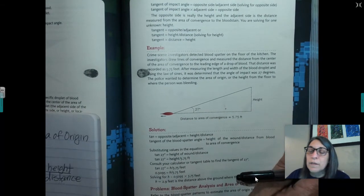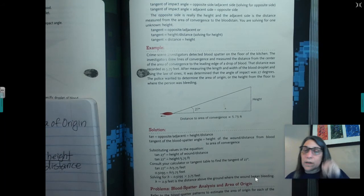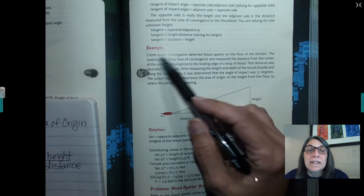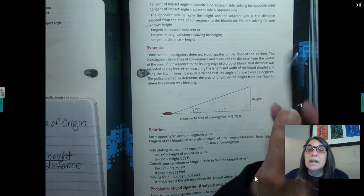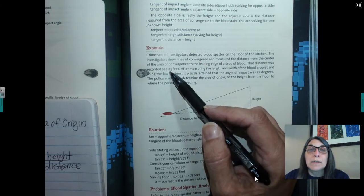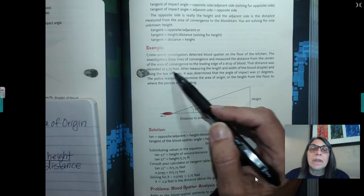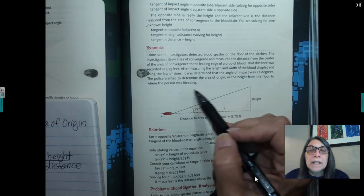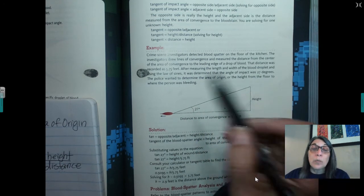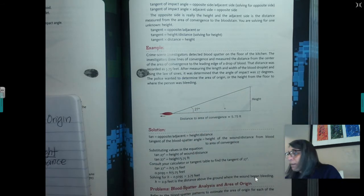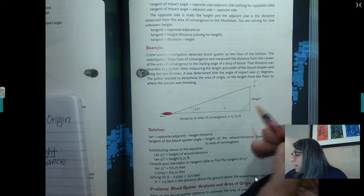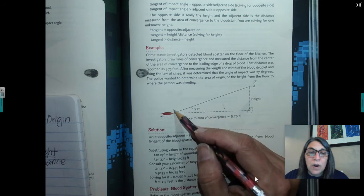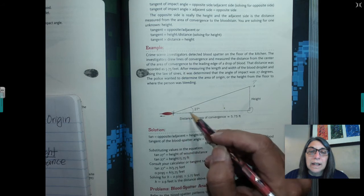So let's just look at the first example and we'll work through it together. Crime scene investigators detected blood spatter on the floor of the kitchen. The investigators drew lines of convergence and measured the distance from the center of the area of convergence to the leading edge of the drop of blood. That distance was recorded as 5.75 feet. Most of the time in these examples, they're just going to give us the distance because we can't actually measure it. After measuring the length and the width of the blood droplet and using the law of sines, it was determined that the angle of impact was 27 degrees. So the police wanted to determine the area of origin or the height from the floor to where the person was bleeding.